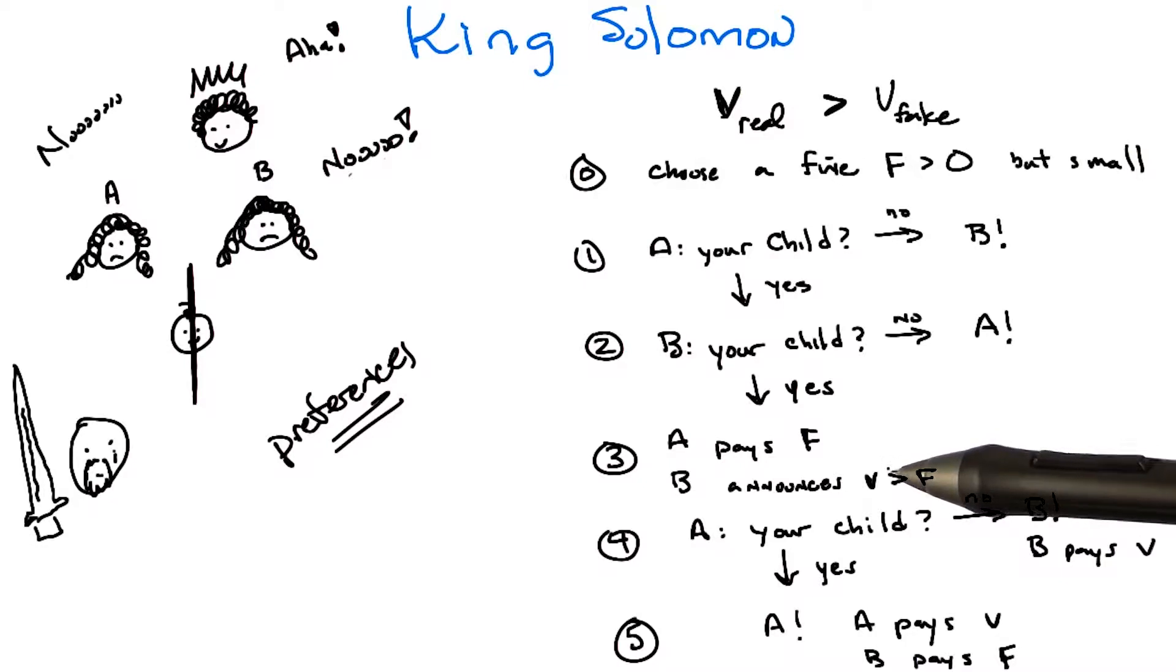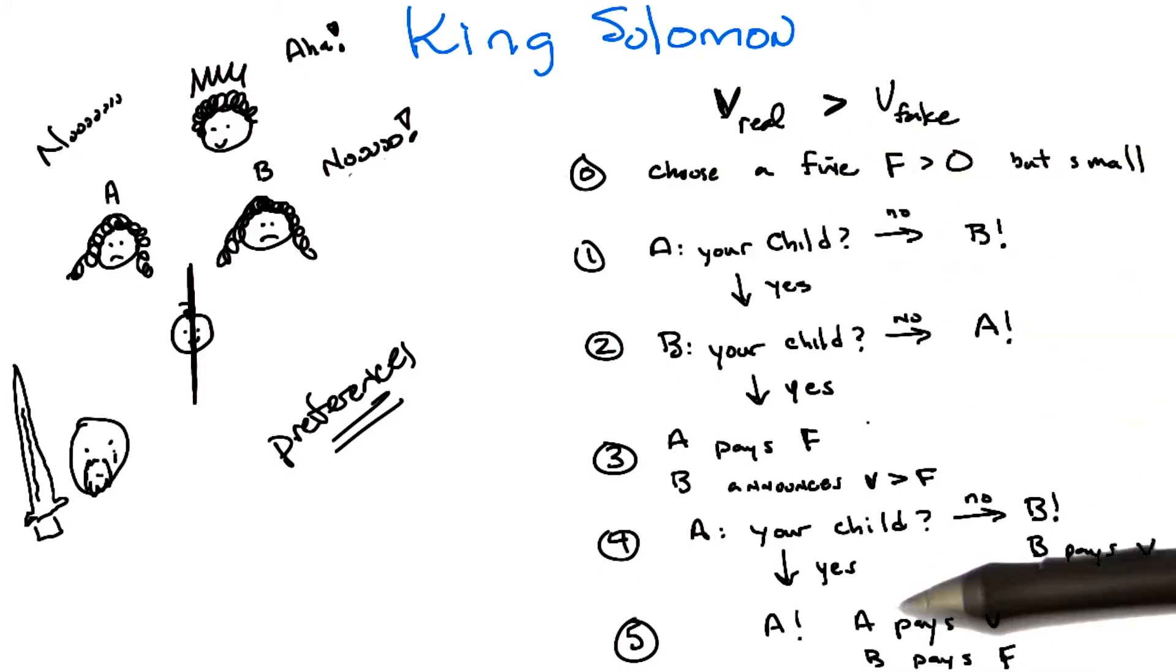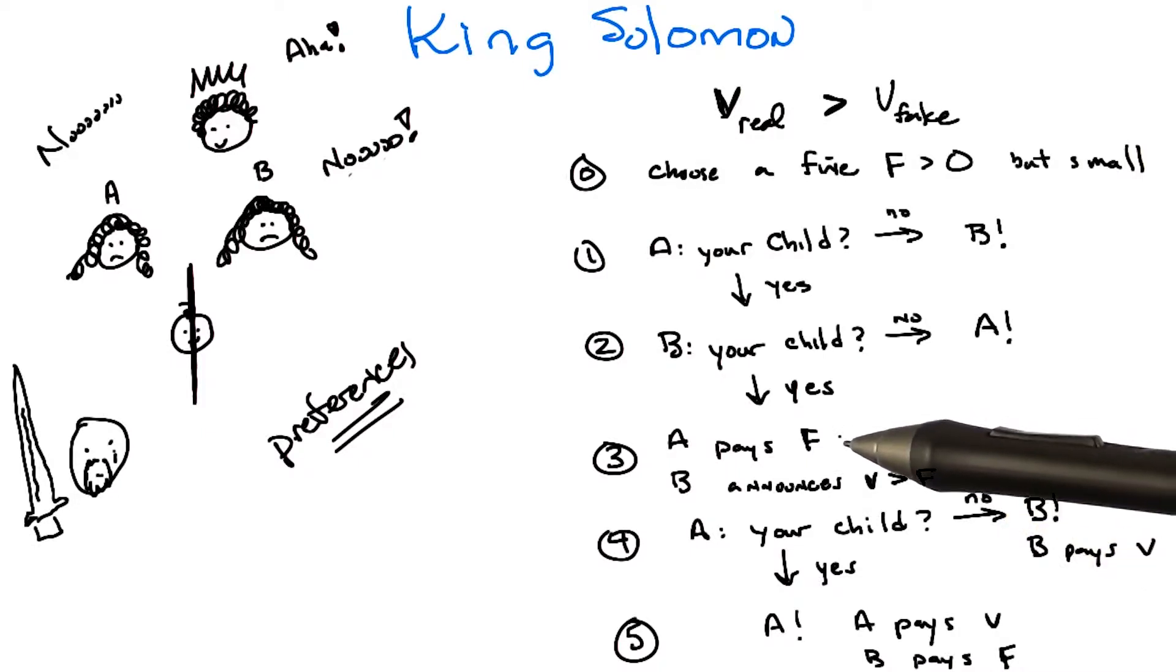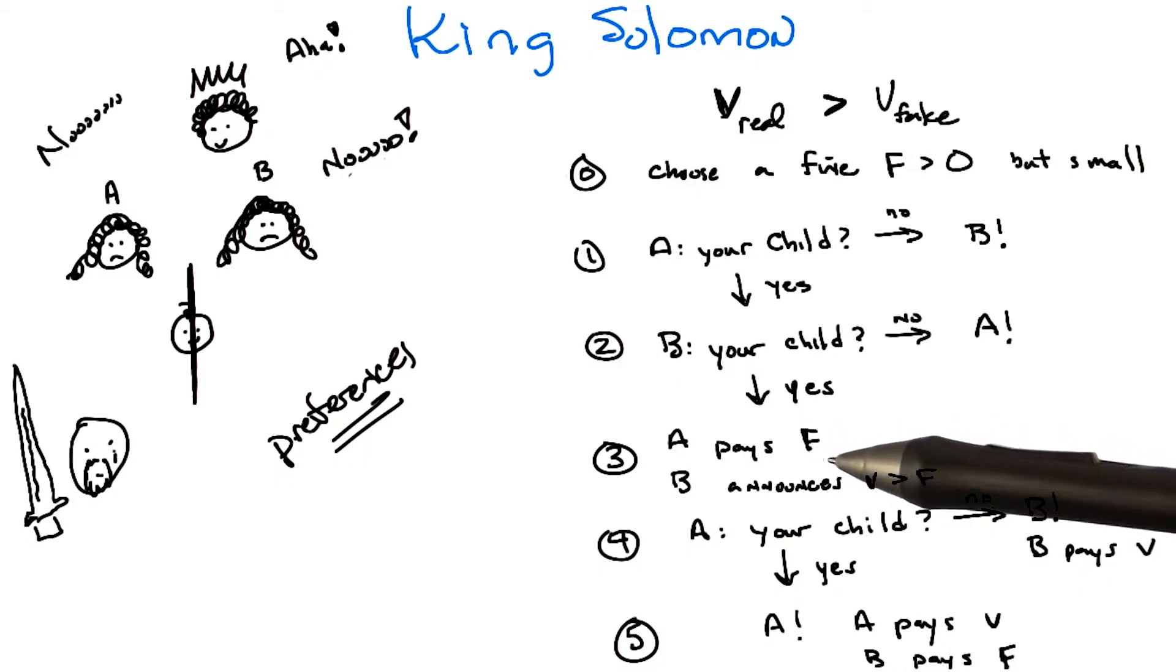And so B is going to basically be truthful and say what B's true value is, which in this case is V real. At that point, A has a choice. A can say yes and is going to have to pay more for the baby than the baby's worth to A, because V real is bigger than V fake, or say no and walk away having paid the fine. But B gets the baby, but at a very high price. But it doesn't matter because F is still bigger than zero.